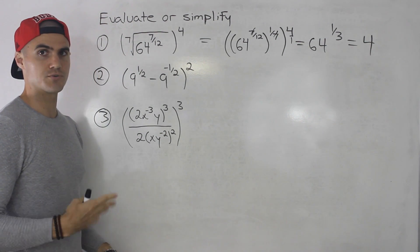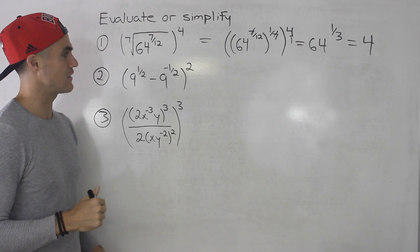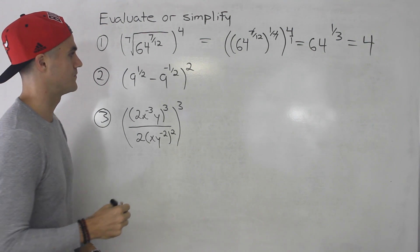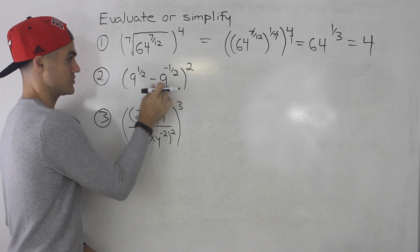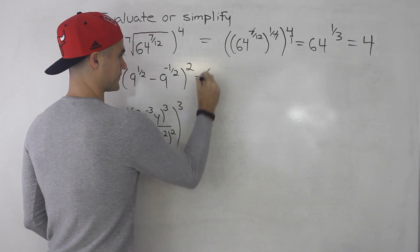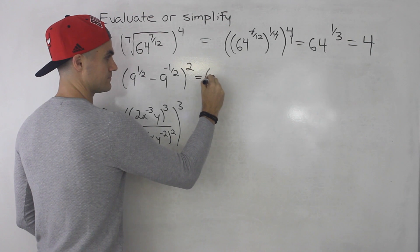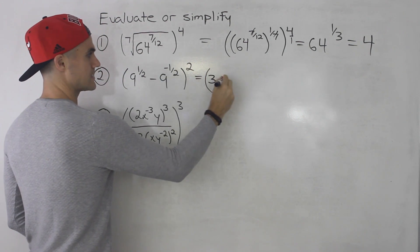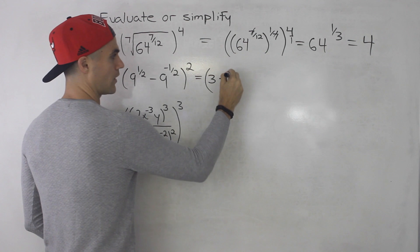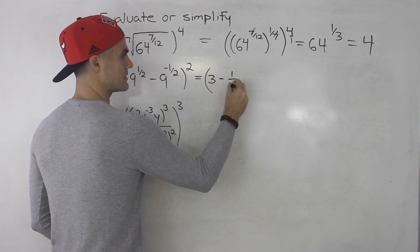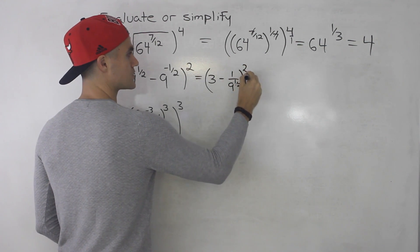Moving on to number 2, we've got 9 to the power of a half minus 9 to the power of negative a half, all to the power of 2. I'm going to simplify the bracket first. So 9 to the power of a half is 3, minus 9 to the power of negative a half, which is like 1 over 9 to the power of a half, and that's all to the power of 2.